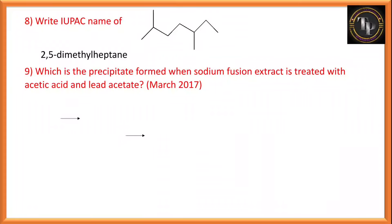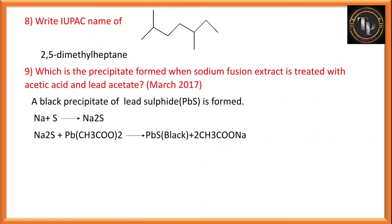Which precipitate is formed when sodium fusion extract is treated with acetic acid and lead acetate? A black precipitate is obtained — that is lead sulfide (PbS). Sodium reacts with sulfide to form Na2S (sodium sulfide), and that sodium sulfide treated with lead acetate gives lead sulfide and sodium acetate. Lead sulfide PbS is black in color.